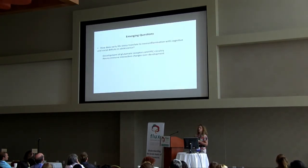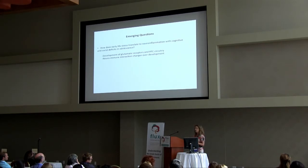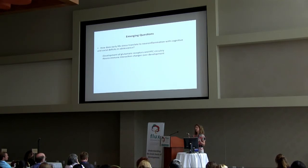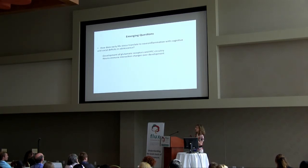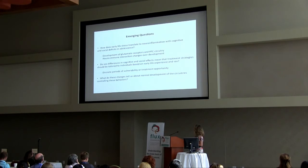This is leading us to many emerging questions surrounding how early life stress translates to these changes that first manifest in adolescence. A lot of what we're discussing relates to the developing connectivity between cortical and prefrontal cortex regions — how this growing innervation interacts with developing neuroimmune function. We don't know much about the lifespan changes in general immunity and the immune system's interaction with the brain during development. We also need to understand how sex differences in circuitry and neuroimmune function interact with early life stress to produce behavioral effects at different developmental time points.